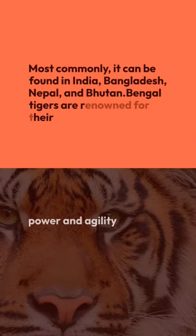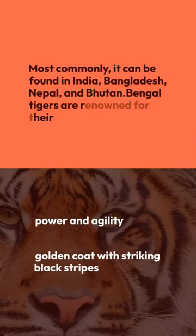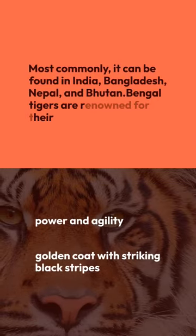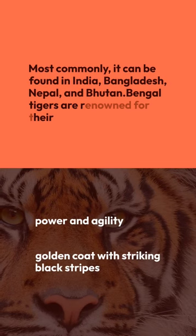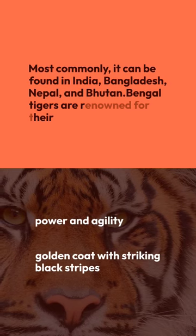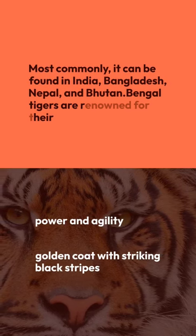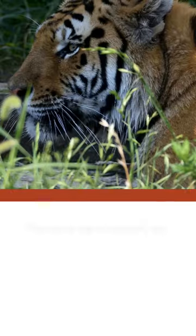Most commonly, it can be found in India, Bangladesh, Nepal, and Bhutan. Bengal tigers are renowned for their power and agility and have a golden coat with striking black stripes.